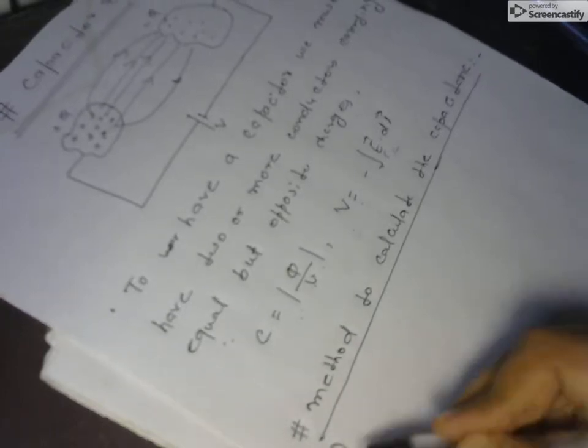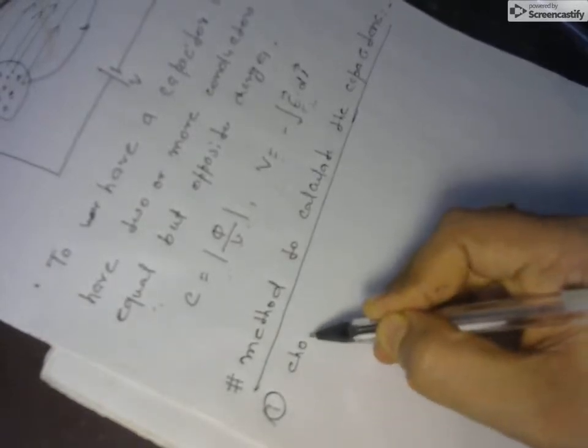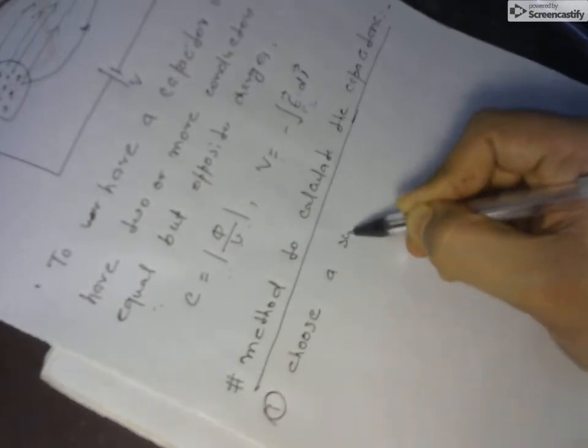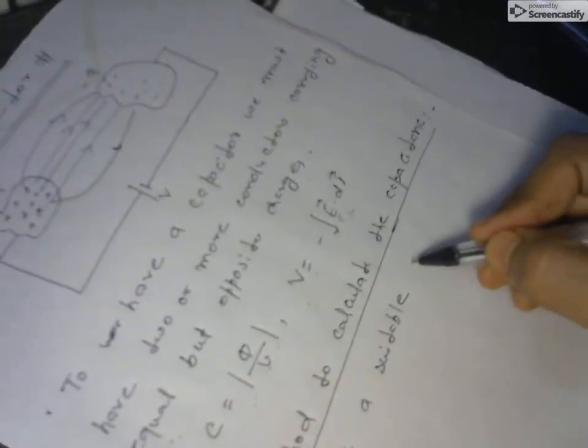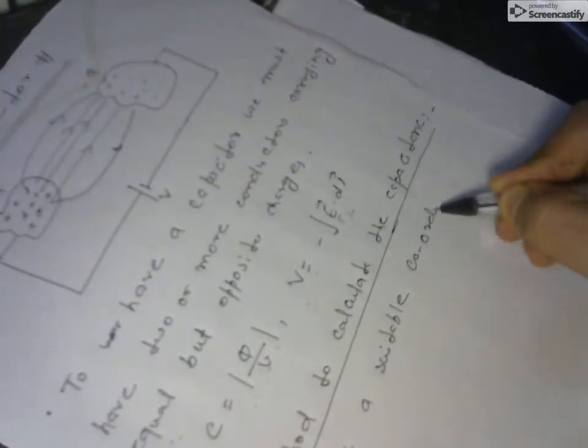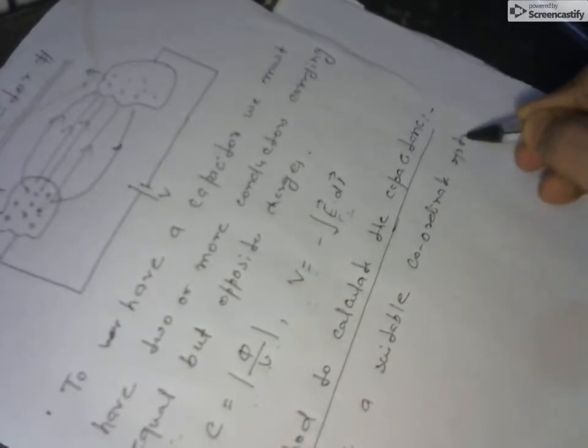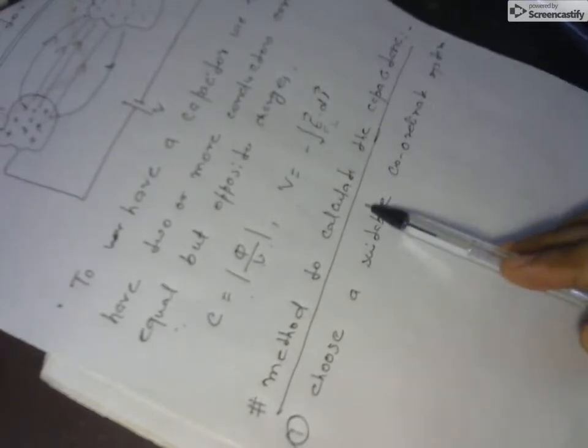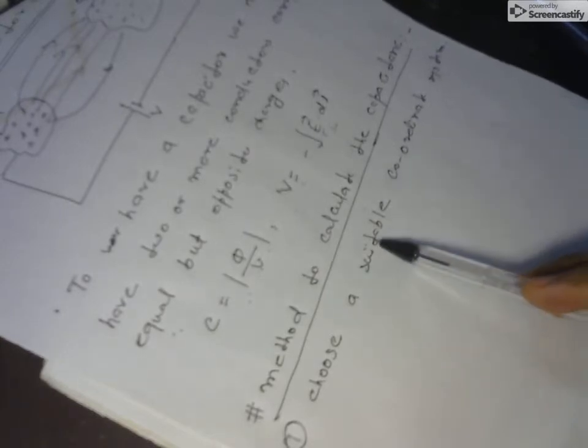The first step is to choose a suitable coordinate system. For different types of capacitors there are different coordinate systems. For the parallel plate capacitor we use the Cartesian coordinate system, for the spherical capacitor the spherical coordinate system, and for the coaxial capacitor the cylindrical coordinate system.